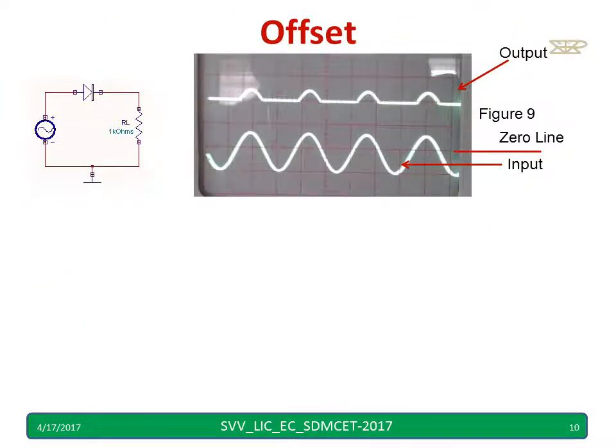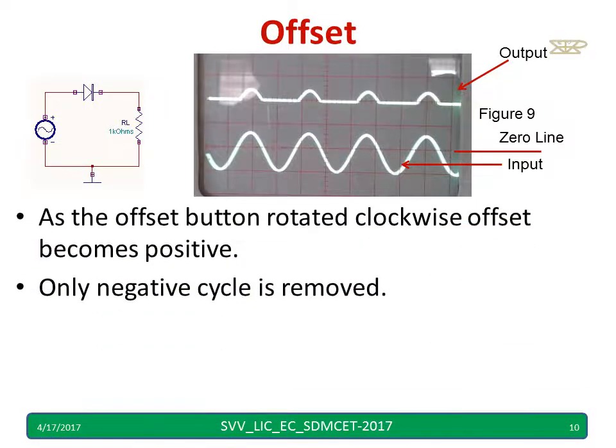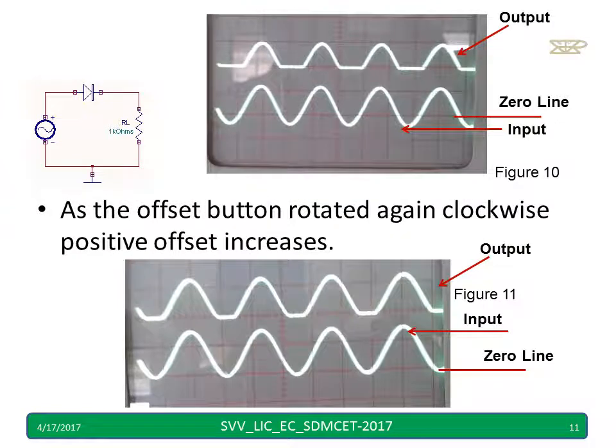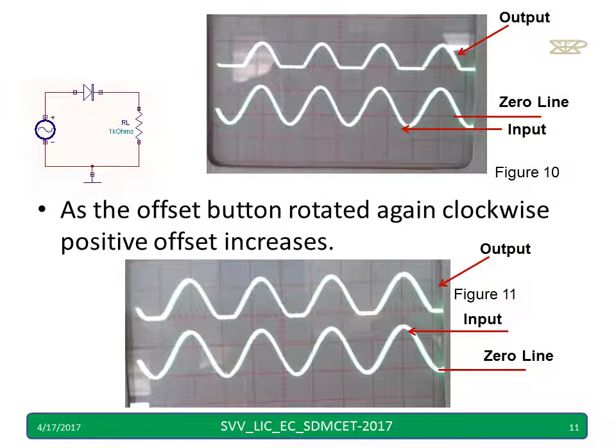Again, as I rotate further, a small portion will become positive in the waveform. You can see this in figure number 9. During that time, the diode will conduct, hence you will get an output. Further, when you rotate clockwise, this positive portion starts increasing. Hence, you will start observing the waveform. Figure 10 shows almost more than half of the positive half cycle is present. During that time, the diode conducts.